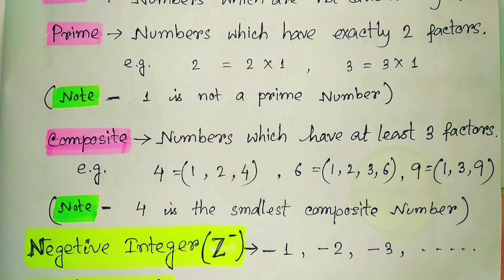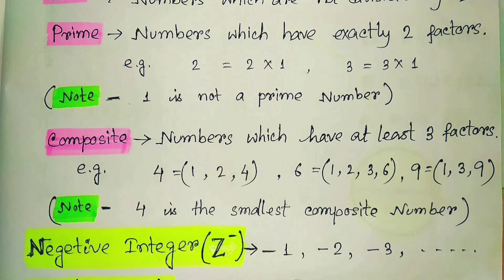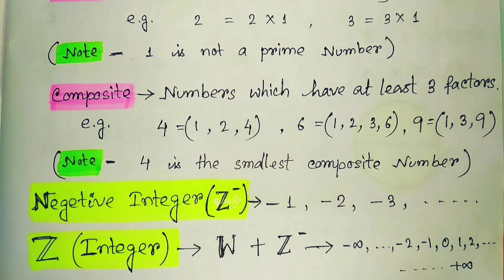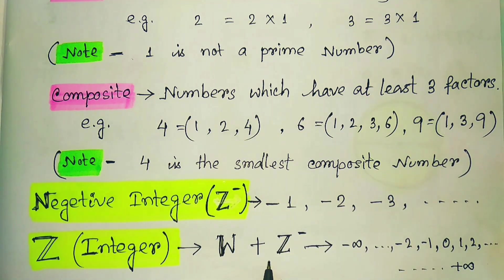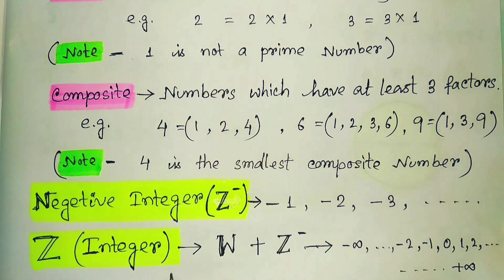Next is the negative integer. With the natural number 1 its opposite is minus one, 2's counter is minus two, and so on. Minus one, minus two, minus three — these are all negative integers. Combining positive numbers, negative numbers, and zero forms the set of integers, denoted by Z.